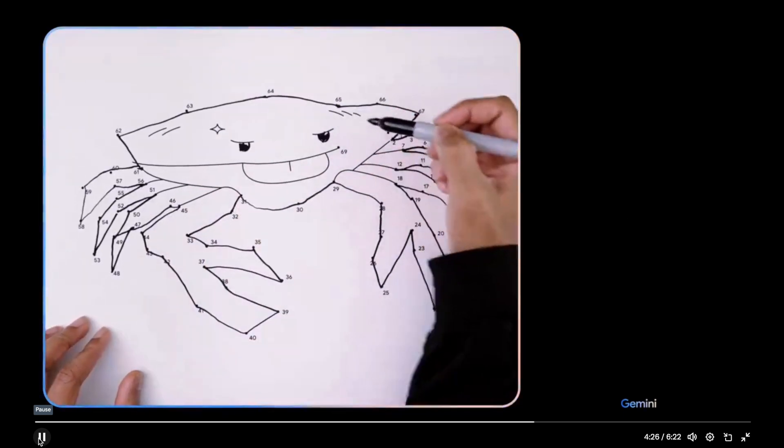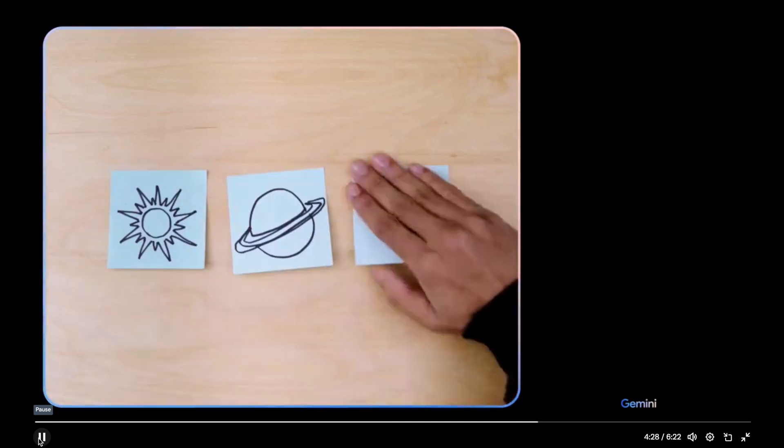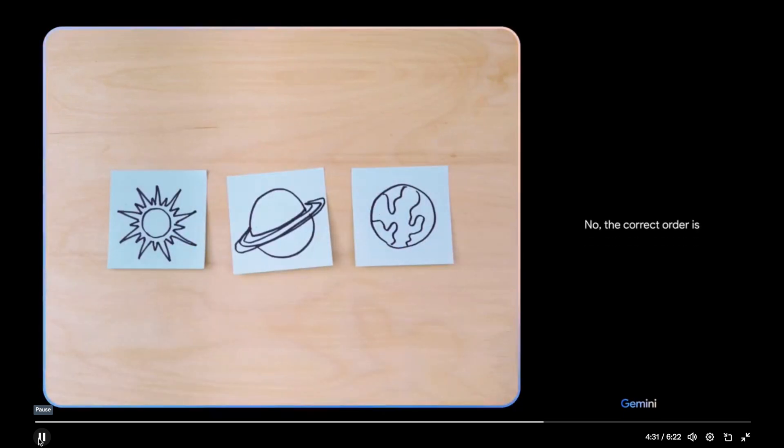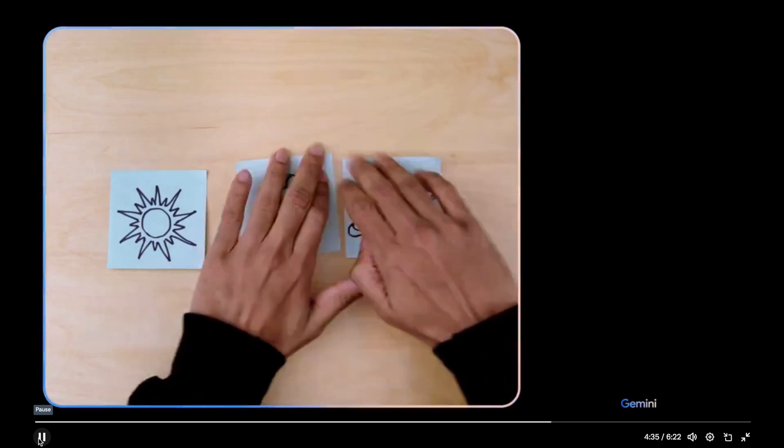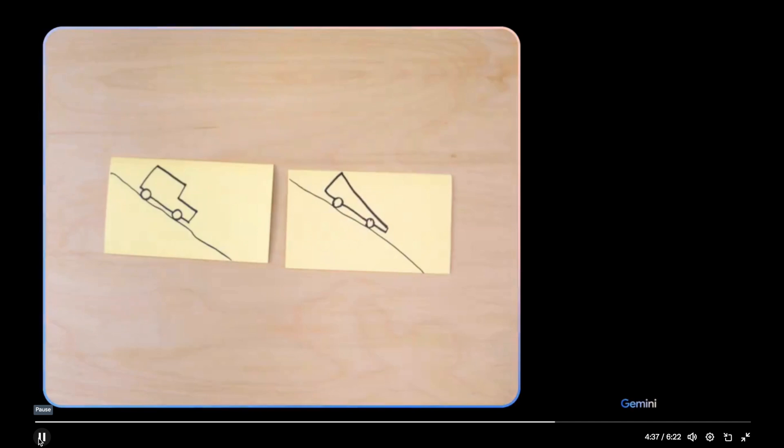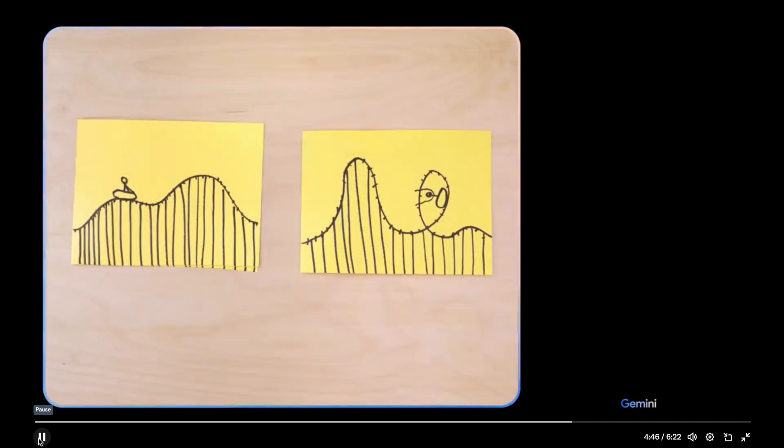This is a picture of a crab. That's right. Is this the right order? No. The correct order is sun, earth, Saturn. Based on their design, which of these would go faster? The car on the right would be faster. It is more aerodynamic.